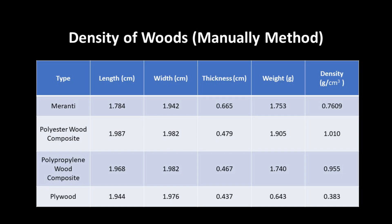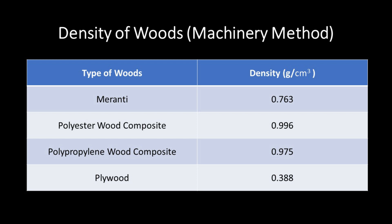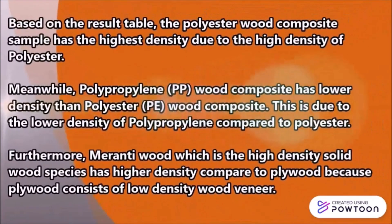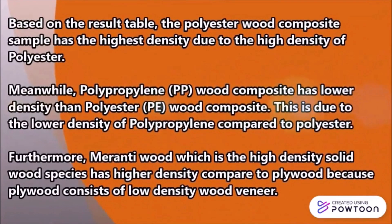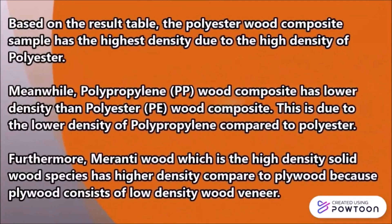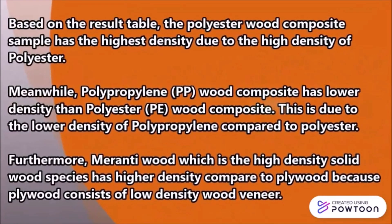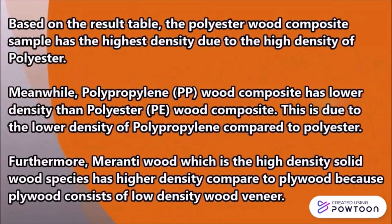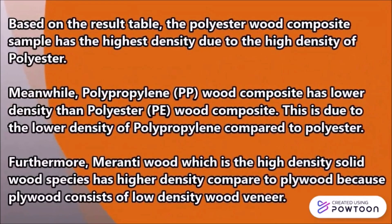This is the tabulation of the results we obtained from the experiment. Based on the result table, the polyester wood composite has the highest density due to the high density of polyester. Meanwhile, polypropylene wood composite has a lower density than polyester wood composite, due to the lower density of polypropylene compared to polyester. Furthermore, meranti wood, which is a high-density solid wood species, has a higher density compared to plywood, because plywood consists of lower density wood veneer.